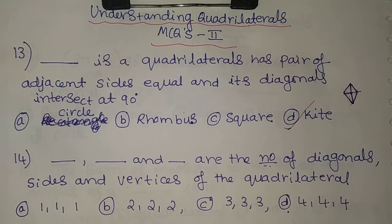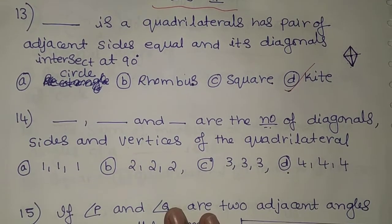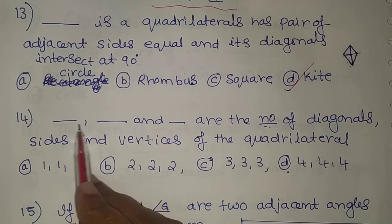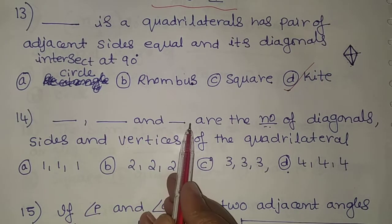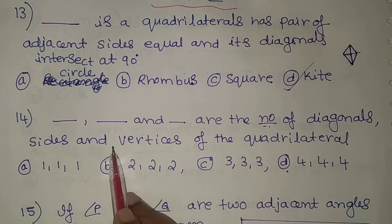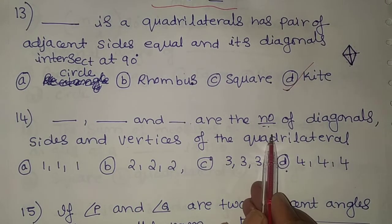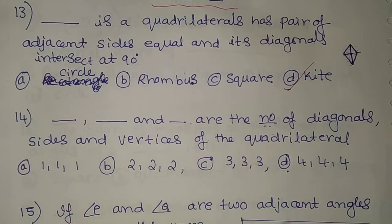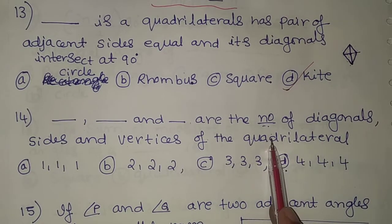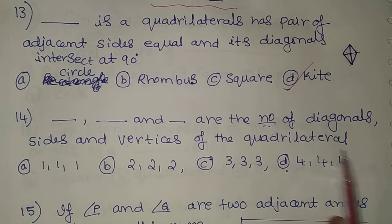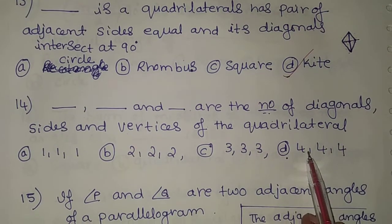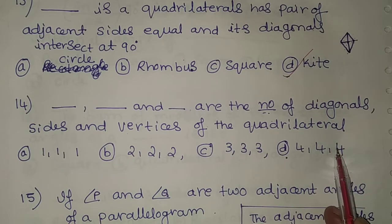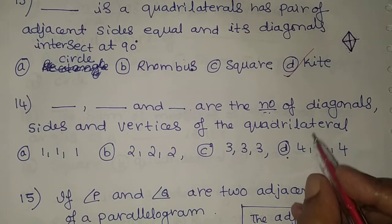The 14th problem: fill in the blanks — the number of diagonals, sides, and vertices of a quadrilateral. A quadrilateral means four-sided, so a quadrilateral has four sides, four vertices, and four diagonals. So option D is the correct answer.